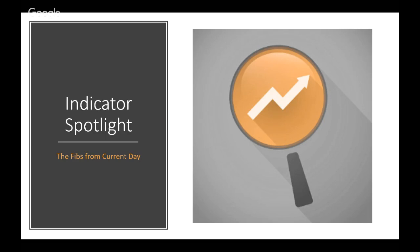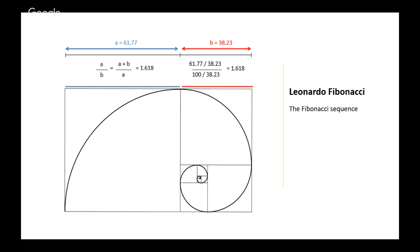Frequently discussed are the Fibonacci retracements and Fibonacci extensions. They refer to areas of support and resistance that are calculated using the Fibonacci sequence. This is credited to Leonardo Fibonacci, an Italian mathematician from Pisa, who lived from 1170 to 1250.